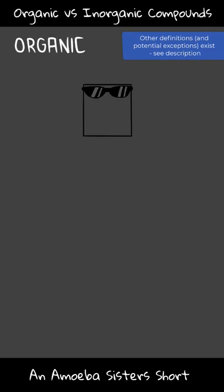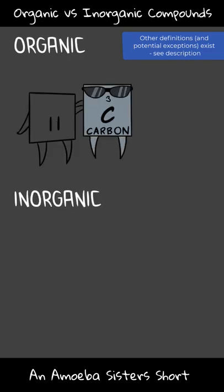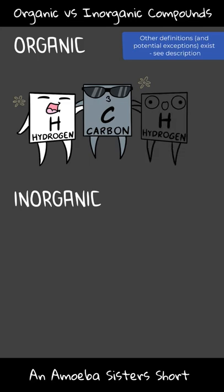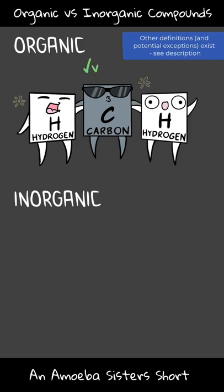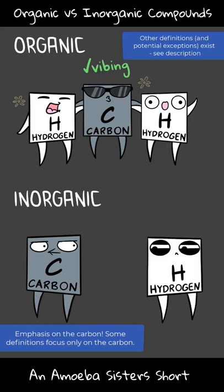Organic compounds generally have carbon — a very important element for a multitude of reasons — and also hydrogen. There can be other elements as well in organic compounds. Inorganic compounds generally do not have both carbon and hydrogen.